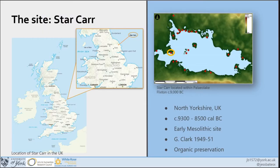I'm using the site of Star Carr, and for those of you who aren't familiar with the site, it dates roughly from around 9300 to 8500 BC — so around 800 years worth of occupation. We're not sure exactly whether it was constant occupation; the likelihood is that it was intermittent, but we do have evidence for humans there across those 800 years.